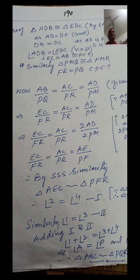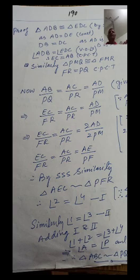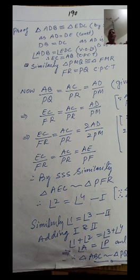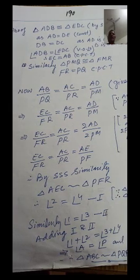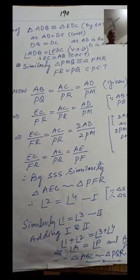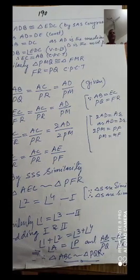Now use the given condition: AB/PQ = AC/PR = AD/PM. Substitute AB = EC and PQ = FR (from CPCT). Also AC = PR and AD = PM equivalently. So EC/FR = AC/PR = 2·AD / 2·PM. The twos cancel, and 2·AD = AE and 2·PM = PF.